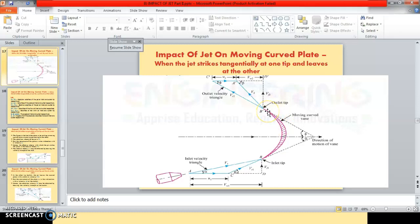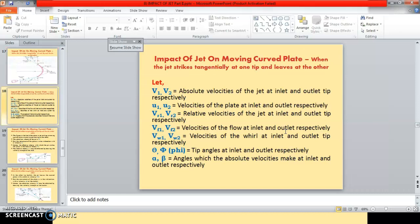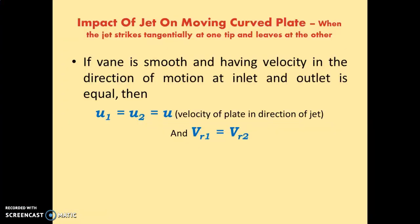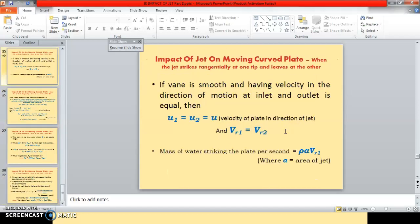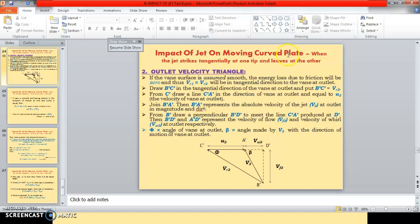Whether we look at the tip or the center of the plate, the velocity is the same because the plate is a solid homogeneous material. So u1 and u2 — the velocities of the plate at inlet and outlet — are both equal to U, the velocity of the plate. Also, if the vane surface is assumed smooth, energy loss due to friction will be zero, and thus Vr1 equals Vr2.